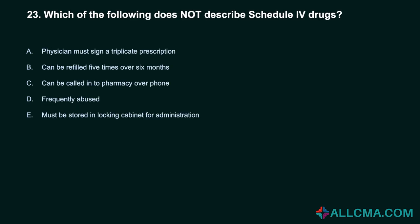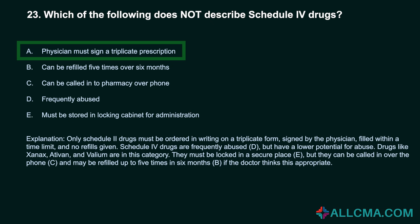Question 23: Which of the following does not describe Schedule IV drugs? A. Physician must sign a triplicate prescription. B. Can be refilled five times over six months. C. Can be called into pharmacy over phone. D. Frequently abused. E. Must be stored in locking cabinet for administration. Correct answer: A. Physician must sign a triplicate prescription. Only Schedule II drugs must be ordered in writing on a triplicate form, signed by the physician, filled within a time limit, and no refills given. Schedule IV drugs are frequently abused but have a lower potential for abuse. Drugs like Xanax, Ativan, and Valium are in this category. They must be locked in a secure place, but can be called in over the phone and may be refilled up to five times in six months if the doctor thinks this appropriate.